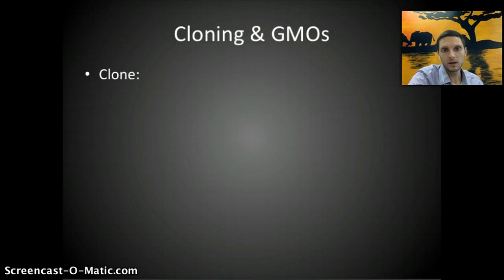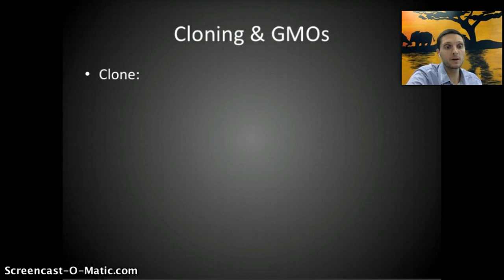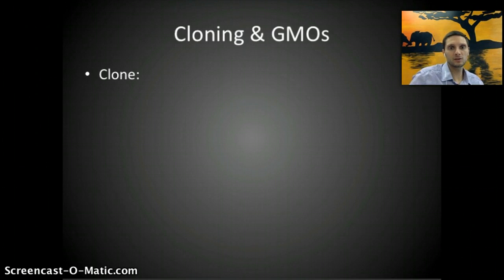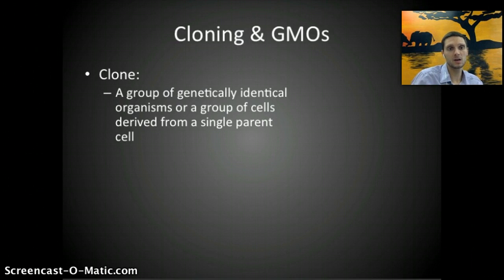A clone does actually happen naturally in nature. For example, garlic is a single garlic bulb that through photosynthesis is able to produce energy to grow a group of bulbs that are genetically identical — that's creating a clone. Strawberry plants would also be an example of a clone. This can also occur through asexual reproduction. A clone is defined as a group of genetically identical organisms or a group of cells derived from a single parent cell.